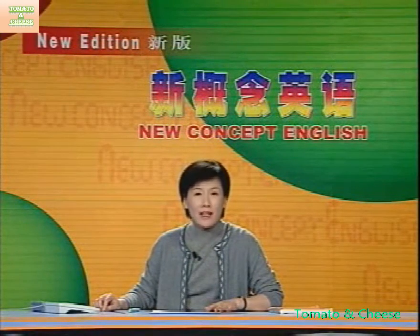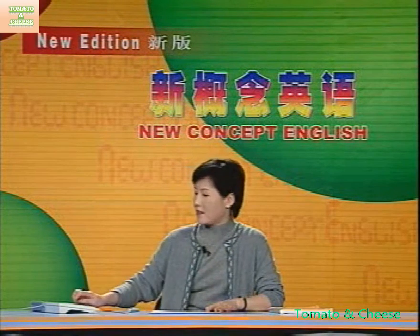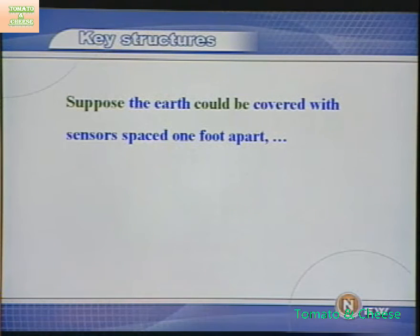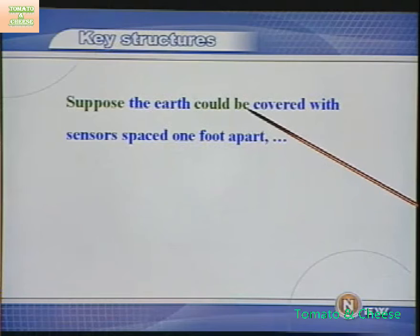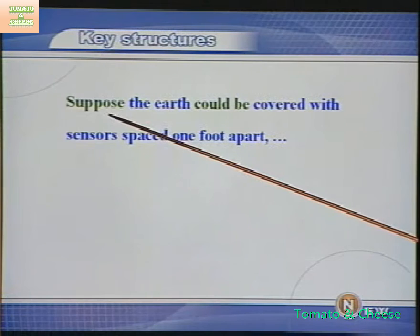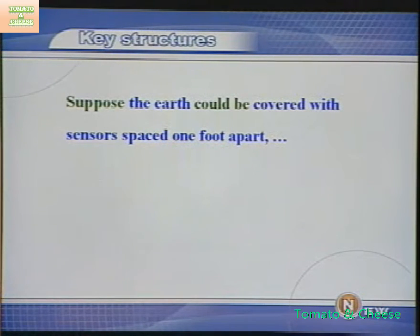So much for the language points. Now let's move on to key structures. 先看这一句：假如地球布满间隔一英尺远的传感器——这是一个条件句，用的是虚拟语气could be。条件句除了用if引导以外，还可以像这个句子用suppose来引导，另外还有supposing、providing、on condition that来引导条件复句。